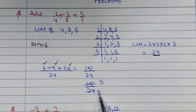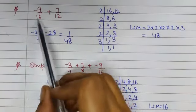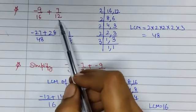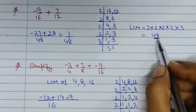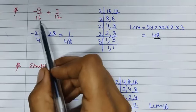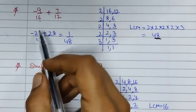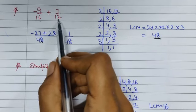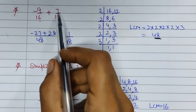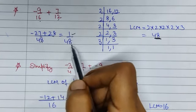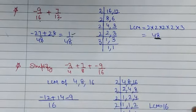Next: minus 9 upon 16 plus 7 upon 12. Take the LCM of 16 and 12, which is 48. 48 divided by 16 is 3; 3 into minus 9 is minus 27. 48 divided by 12 is 4; 4 into 7 is 28. So 28 minus 27 is 1 upon 48. This is our final answer.